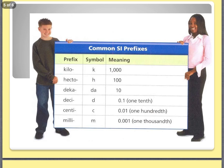And here are some common prefixes that are used when we are using metric system. So for example, kilo stands for 1000. So if I say kilogram, that means 1000 grams. If I say hectogram, that means 100 grams and so on.